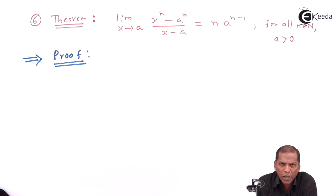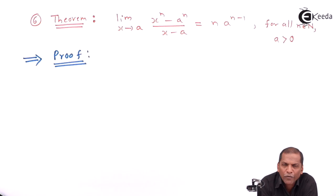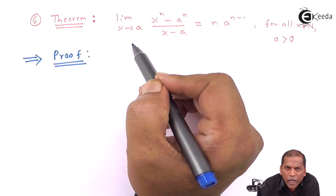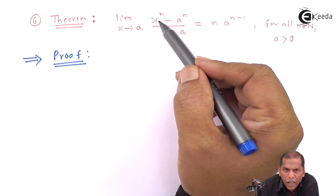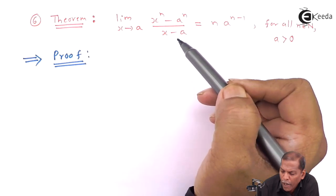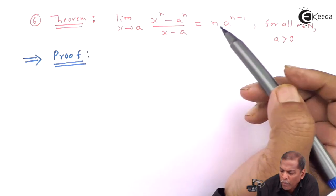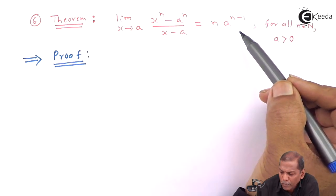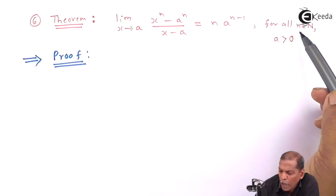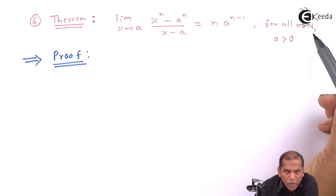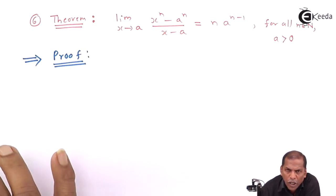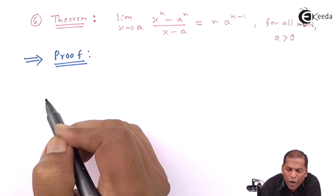Now we see subtopic 6, which includes the theorem of limits from the chapter on limits. The theorem is: the limit as x tends to a of x raised to n minus a raised to n, divided by x minus a, equals n into a raised to n minus 1, for all n belonging to the set of natural numbers, provided a is greater than 0. The proof is quite simple.